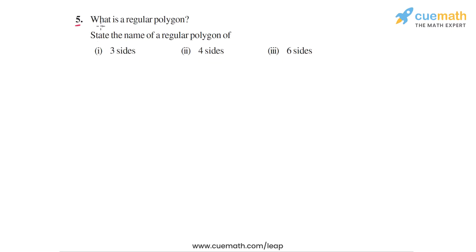Question 5 asks: what is a regular polygon, and then state the name of a regular polygon of 3 sides, 4 sides, and 6 sides. So what is a regular polygon? Well, a regular polygon is any polygon with equal sides and equal angles. So let's write this definition first.